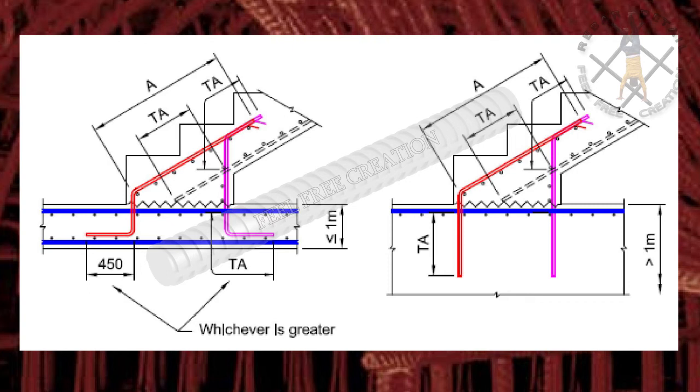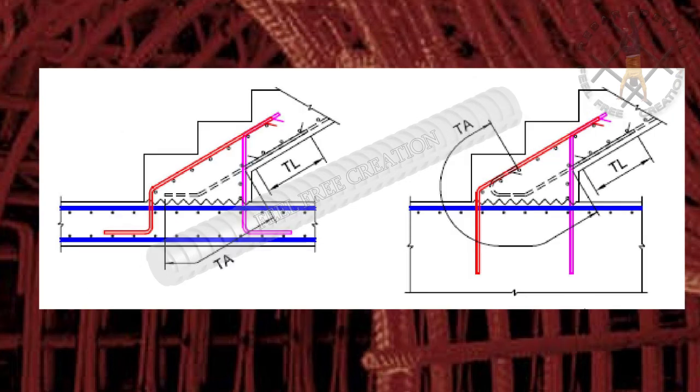If we have foundation or slab more than 1000 mm, then the right side arrangement can be suggested, that is tension anchorage to be embedded in the foundation.